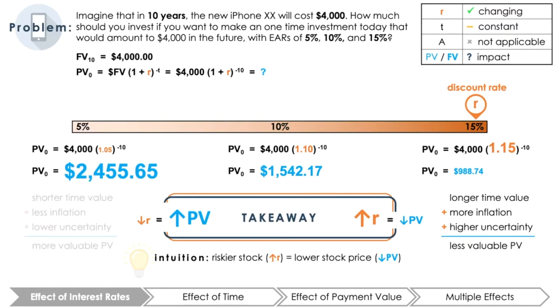At the same time, a small discount rate means that $1 in 10 years will be more similar in value to $1 today. Another way you can think of this is that, at a higher rate, a small amount of money needs to be invested today to result in $4,000 in the future.